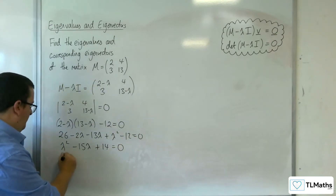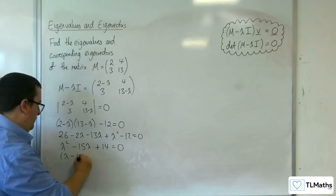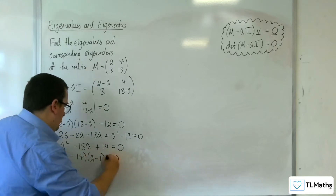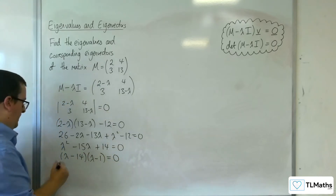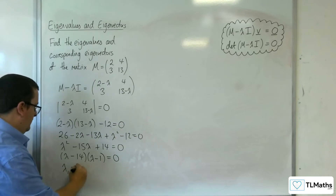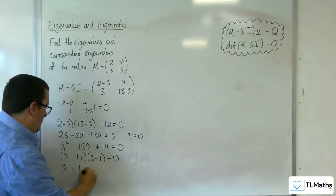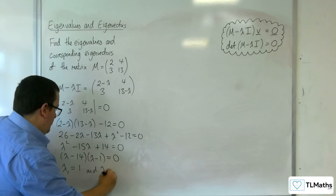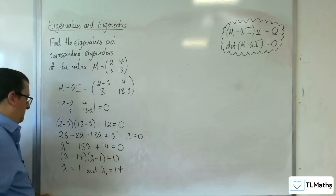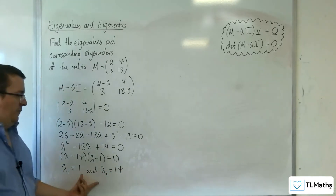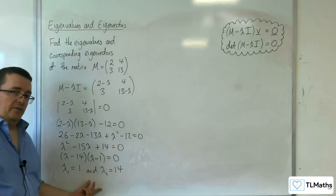So that factorises to (lambda take away 14)(lambda take away 1) equals 0. So lambda 1 is going to be equal to 1, and lambda 2 is going to be equal to 14. So we've got our two eigenvalues.